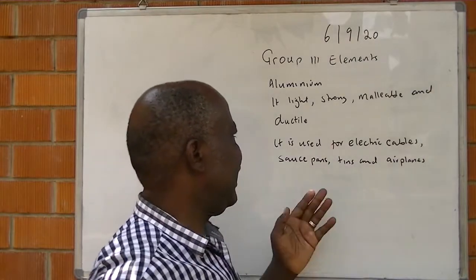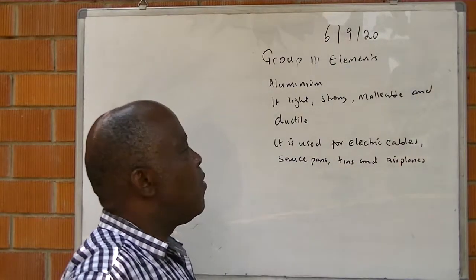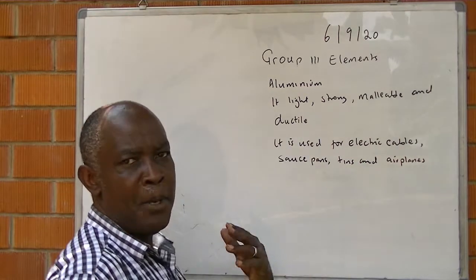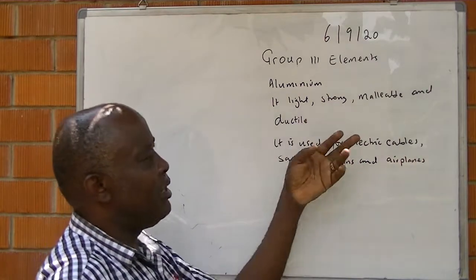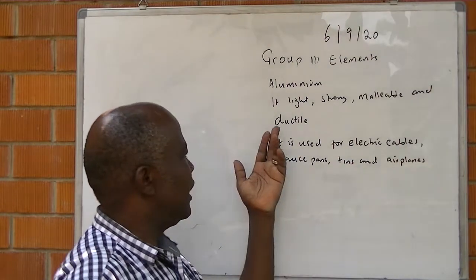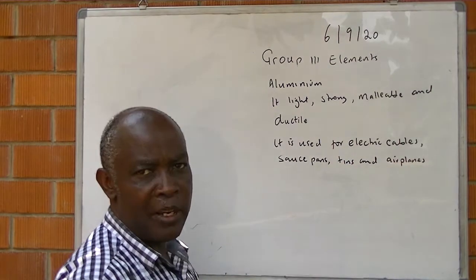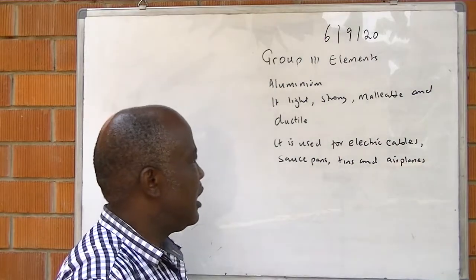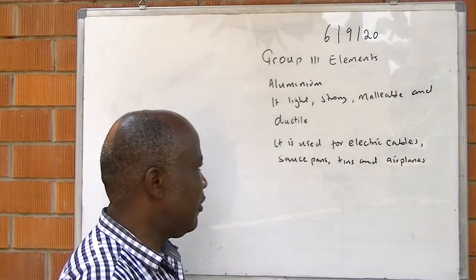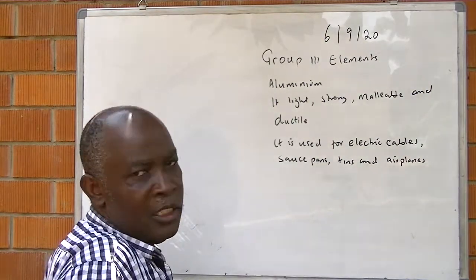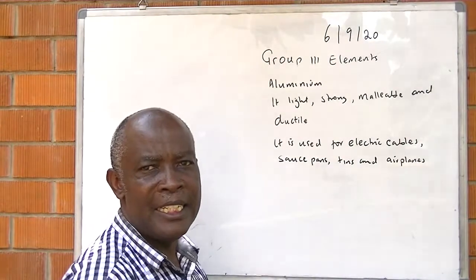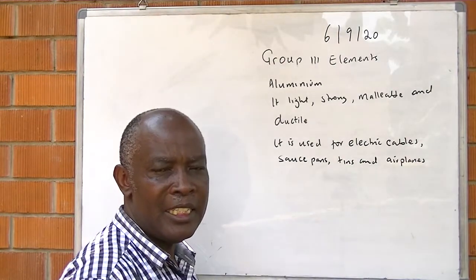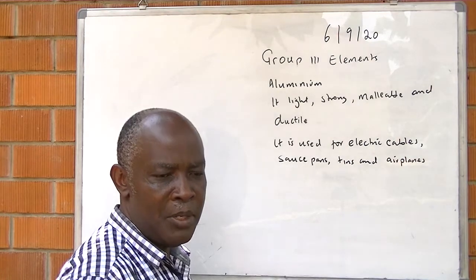Aluminium is a light, strong, malleable, and ductile metal. Malleable means it can be made into sheets; ductile means it can be made into wires. It is used for electric cables, saucepans, tins, airplanes, containers, and more.